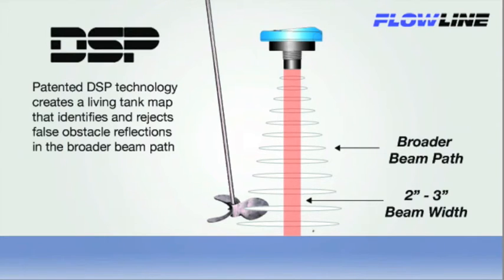DSP is able to filter out false obstacle reflections and track the true level of liquid. This gives Flowline ultrasonic sensors a 2-3 inch minimum beam width across the measurement range and increases the installation flexibility of the sensor. This allows Flowline ultrasonic sensors to measure reliably in tight places or applications with obstructions.